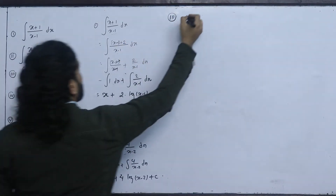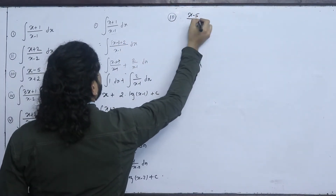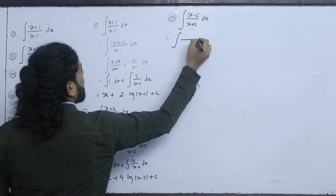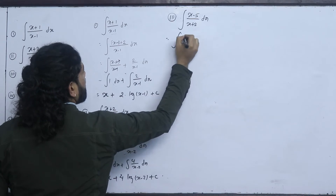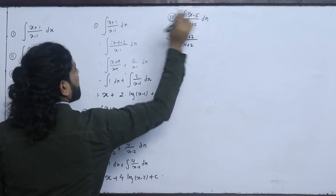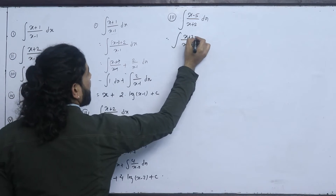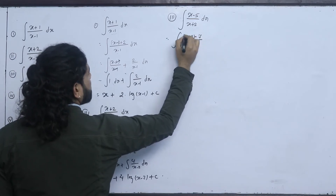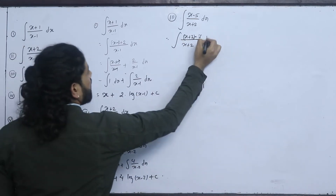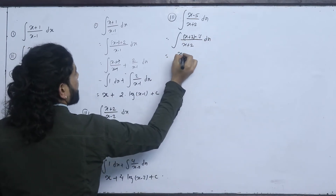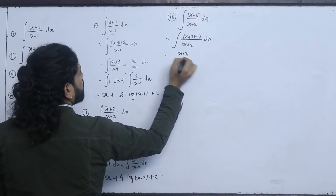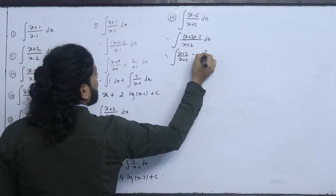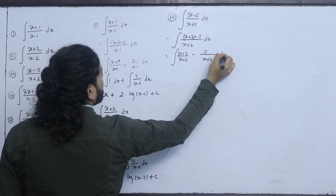Now Question 3: integral of (x-5)/(x+2) dx. We can rewrite x-5 as (x+2) minus 7, giving (x+2)/(x+2) minus 7/(x+2). Separating, this is 1 minus 7/(x+2) dx.